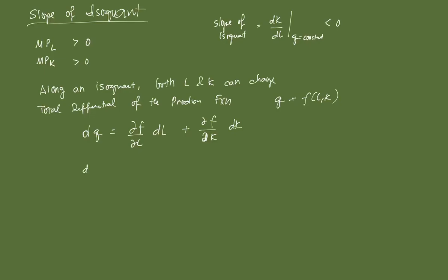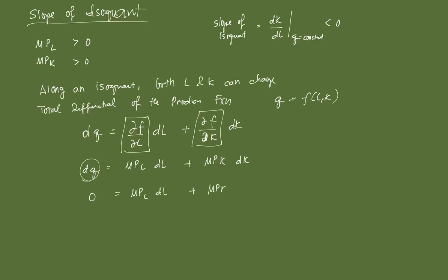Now, dQ represents the change in Q. But remember, along the same isoquant, Q doesn't change — any combination along the same isoquant leaves Q constant. So dQ equals zero, giving us: 0 = MPL·dL + MPK·dK.